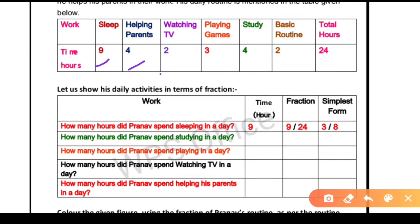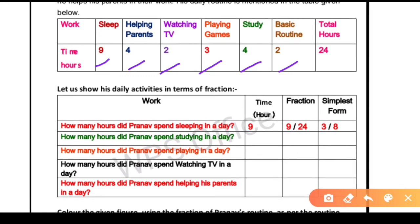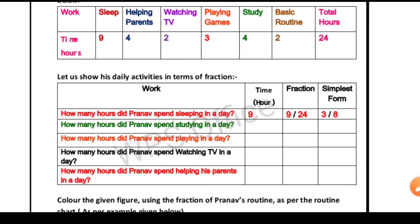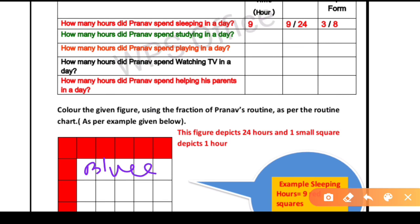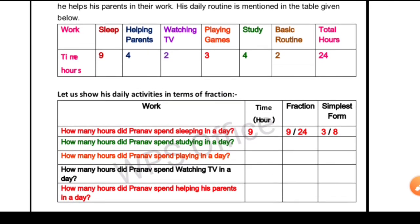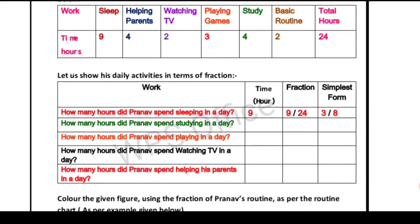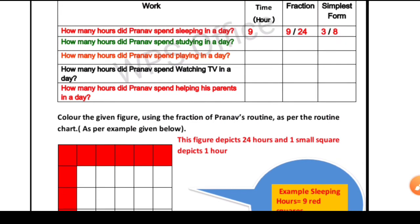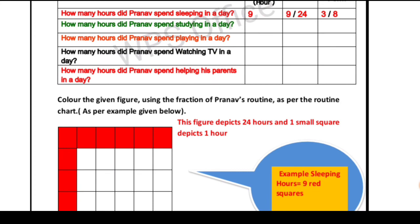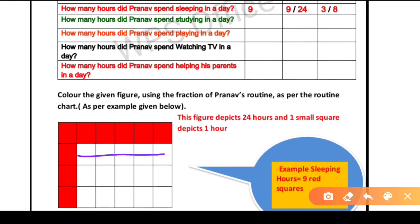Now for the color-coding activity: watching TV is purple, playing games is orange, study is green, basic routine is brown. You have to fill 9 boxes with red for sleeping, 4 boxes with blue for helping parents, 2 boxes with purple for watching TV. Fill 3 boxes for playing, then 4 for study, and 4 for basic routine.